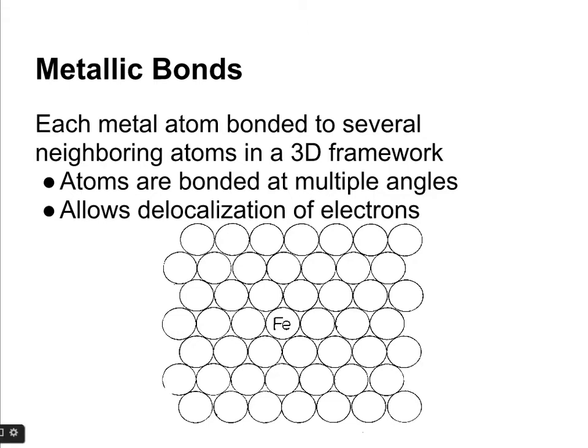That delocalization means that electrons aren't just going to stay with their parent atom. They're going to be able to move all over the entire mass that's metallically bonded together. That's why metals are good conductors of electricity. They allow that free movement of electrons.